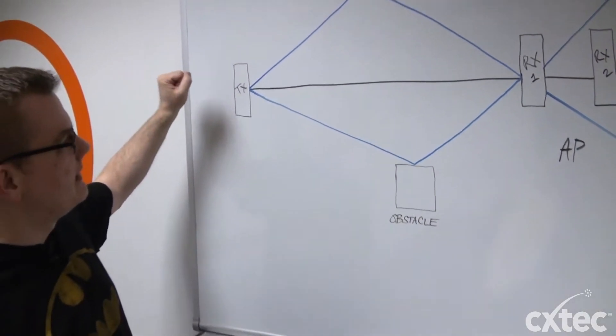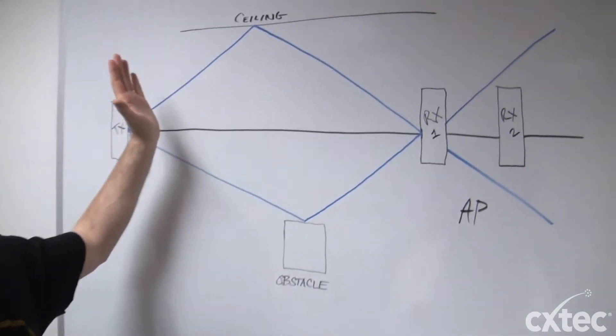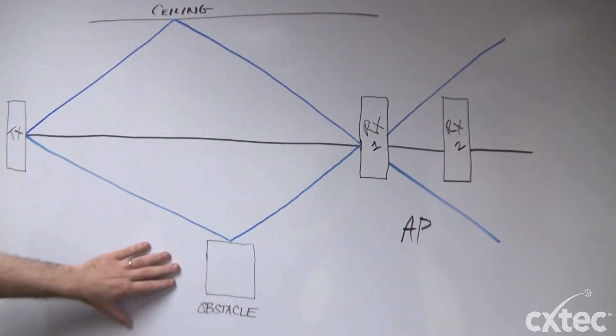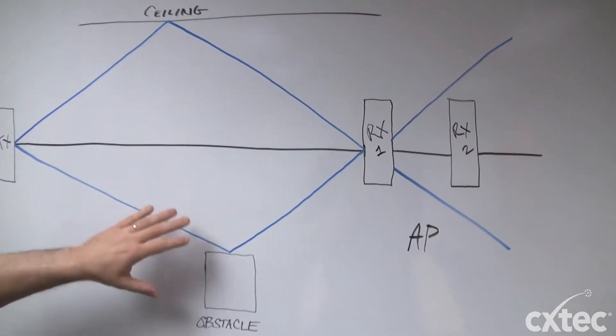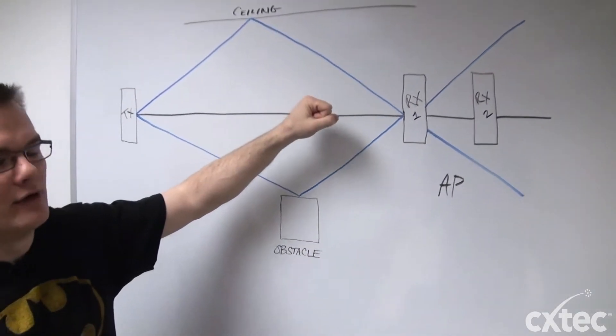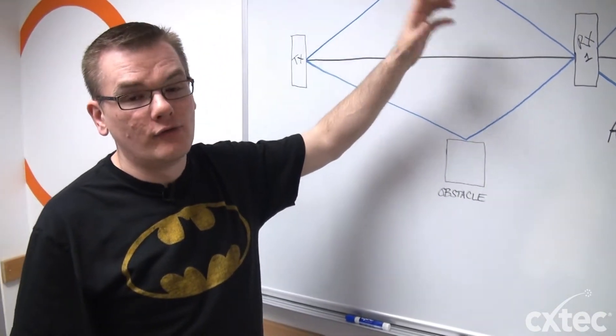I will explain what multi-path propagation is. That is when signals are transmitted into a room or an environment, and because of obstacles, be they the ceiling or maybe a metal filing cabinet, those signals are bounced around the room and arrive at the antenna at different intervals. This can cause retransmits and throughput issues.